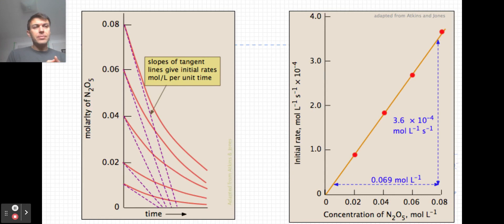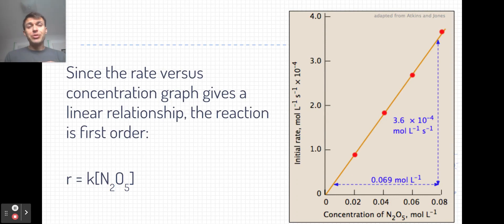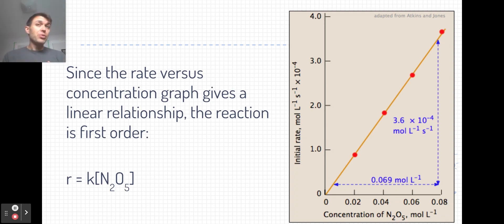If it's not a first order reaction — if there's some fractional or higher order exponent — it might be difficult to determine just by looking at the graph, but we could use a spreadsheet and graphing software to determine the equation of the line. In the following video, we're going to go through a tutorial on how to take actual experimental data and figure out the rate law equation, because it's not always first order with a nice straight line. It might be second order or something in between, requiring different mathematical tools.